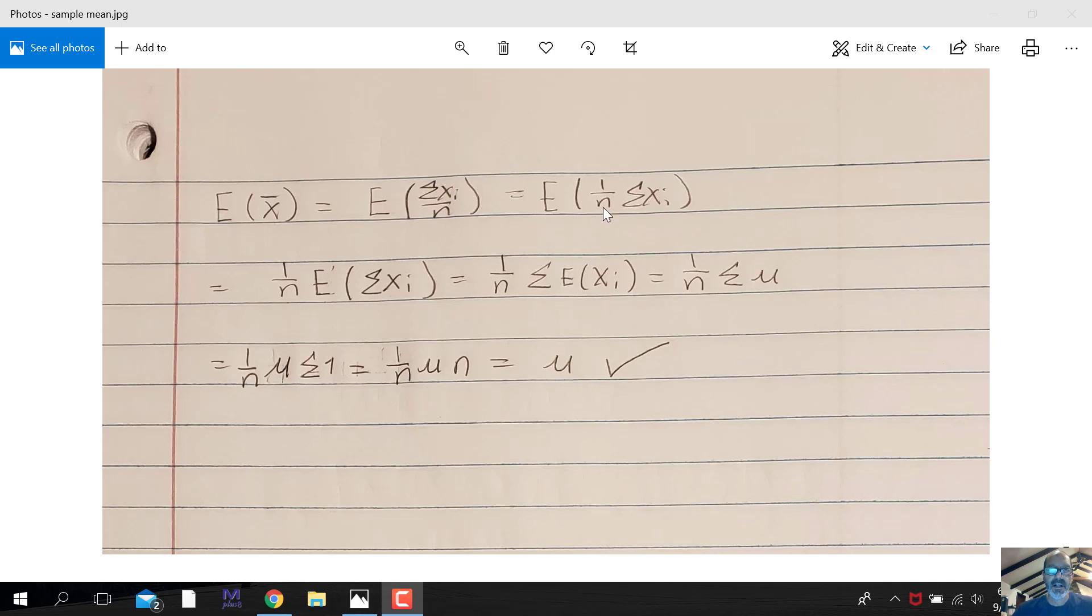And we take the expected value, so we can pull out the 1 over n, or if we could do n to the minus 1, whatever you like. So this is a constant here, so the expected value of that would be itself. So we can pull out the 1 over n, and we get the expected value of the sum of the xi.